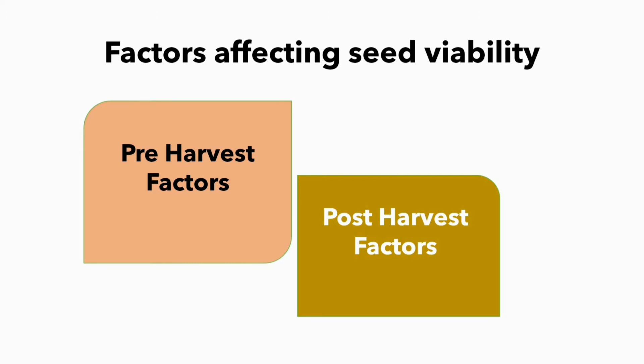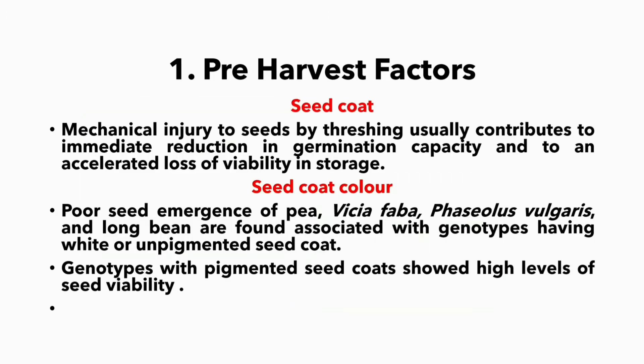Pre-harvest factors — first one: seed coat. Mechanical injury to seeds by threshing usually contributes to immediate reduction in germination capacity and to an accelerated loss of viability in storage. The next one is seed coat color: poor seed emergence is due to genotypes having white or unpigmented seed coats — example: pole long bean.